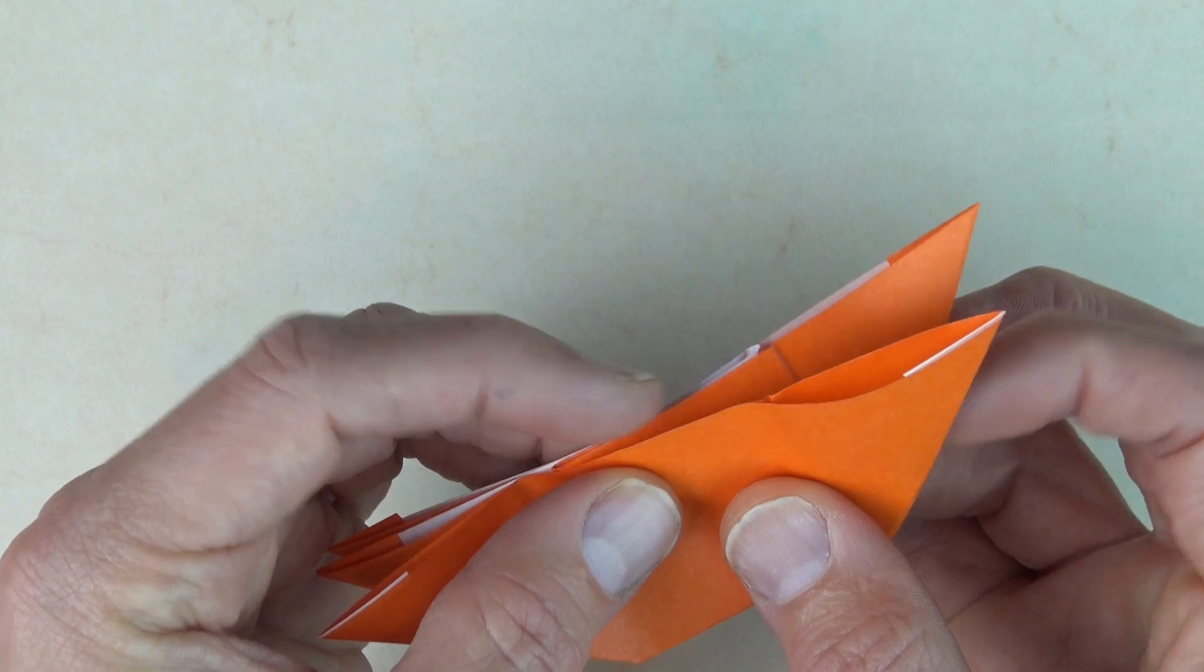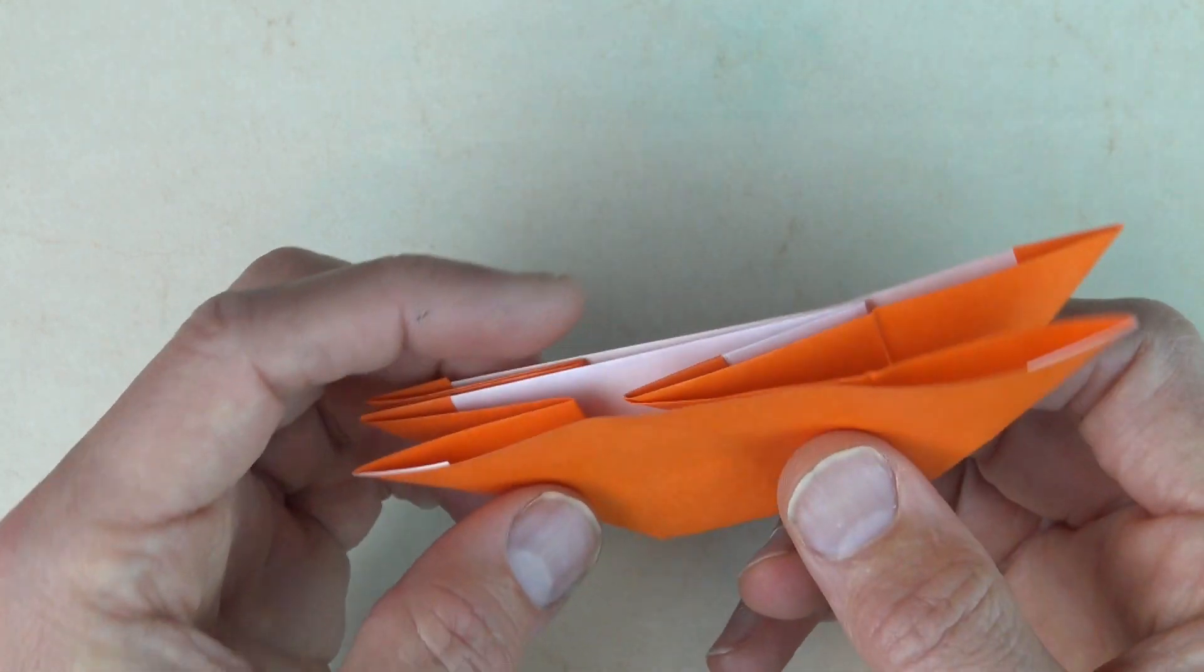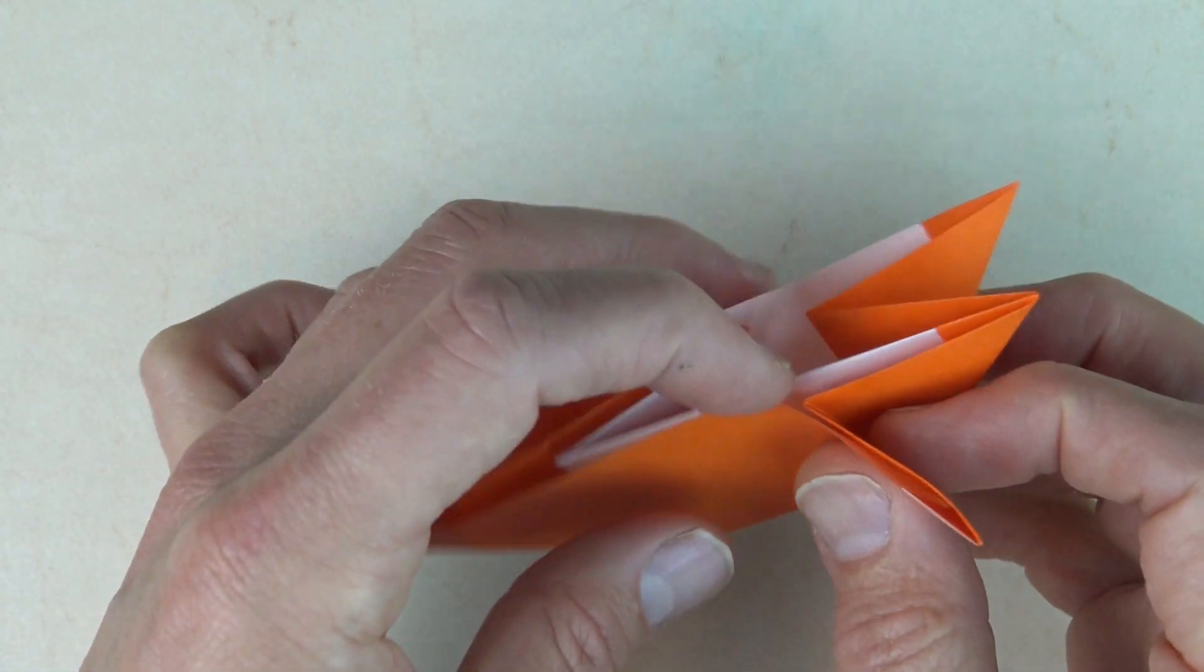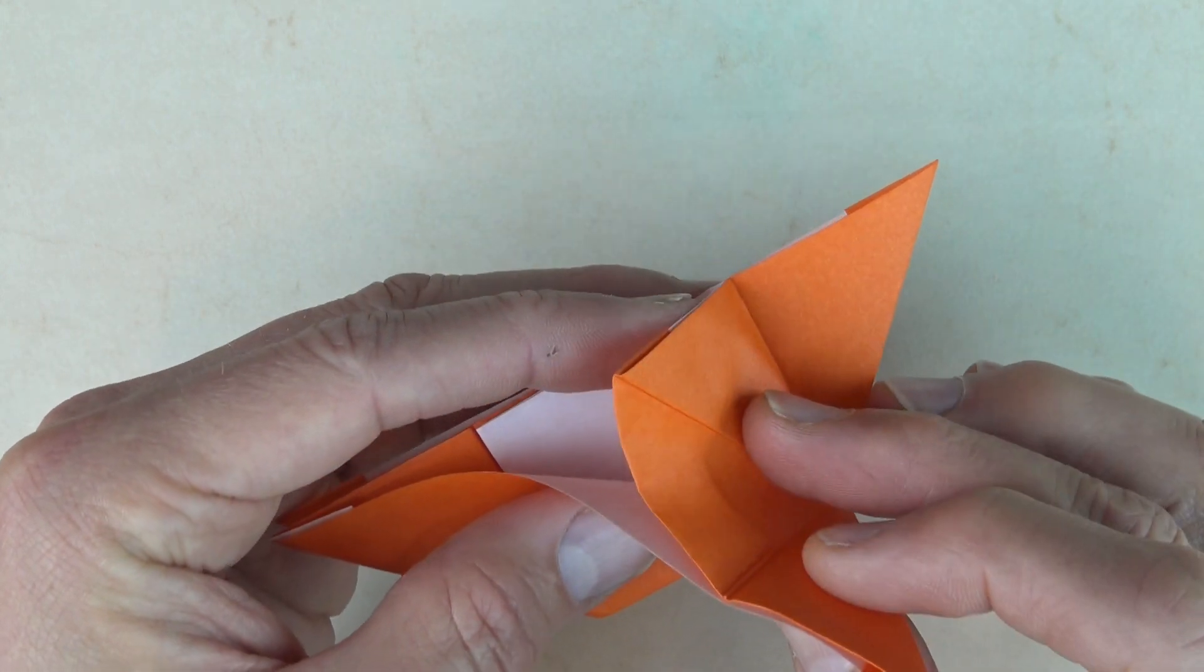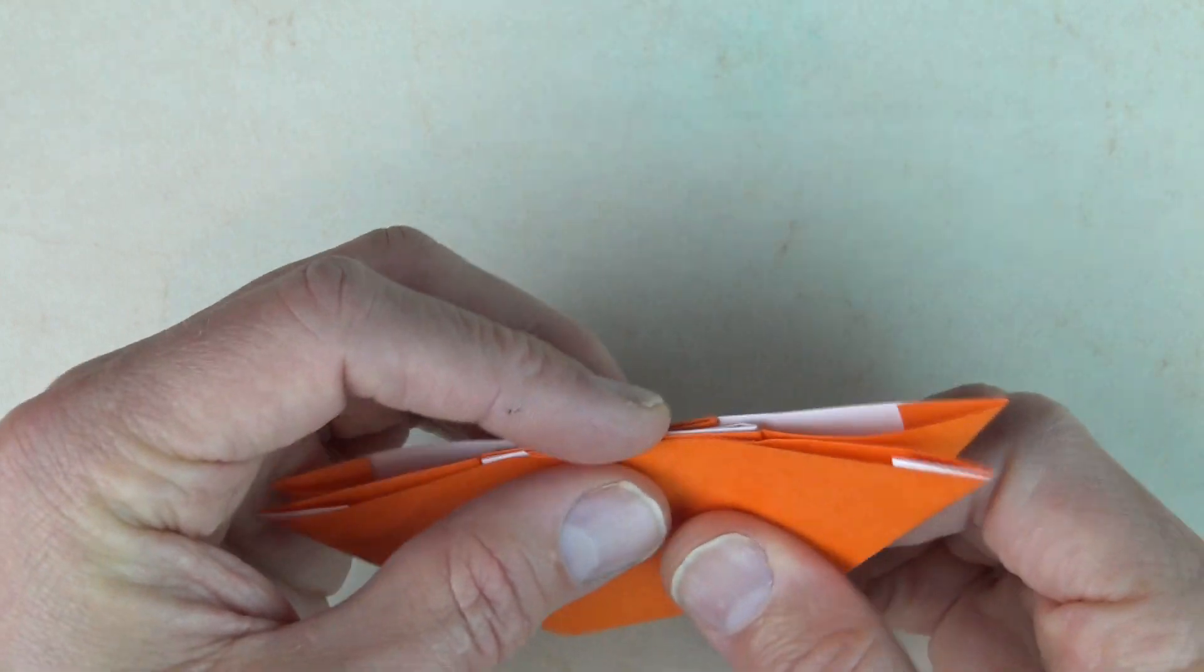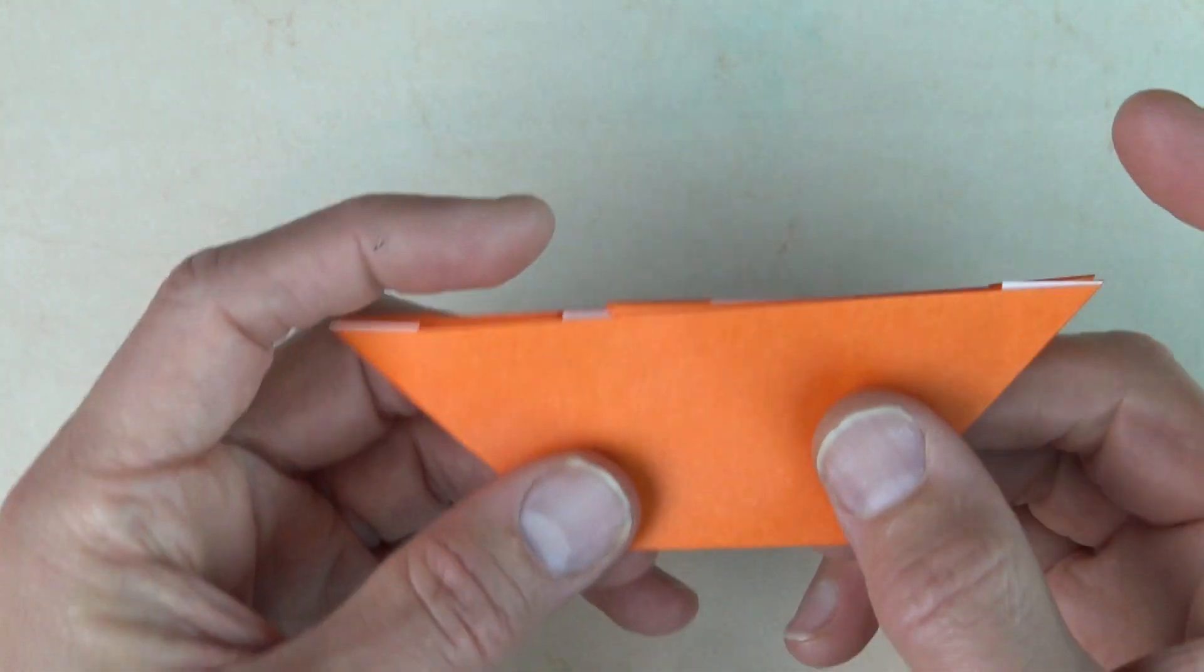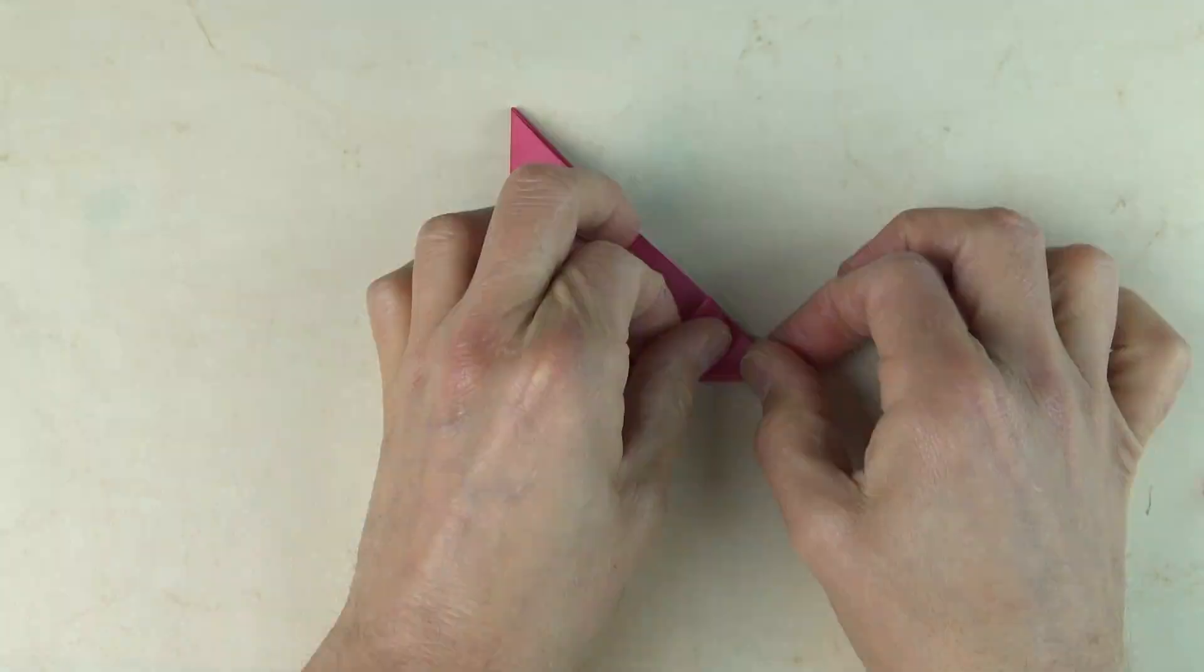And now close it like this. Now turn over. And repeat. So open here. And just push this flap in like this. And close. And our first module is done. And now we have to repeat that 11 more times. And I'm going to fast forward this part.